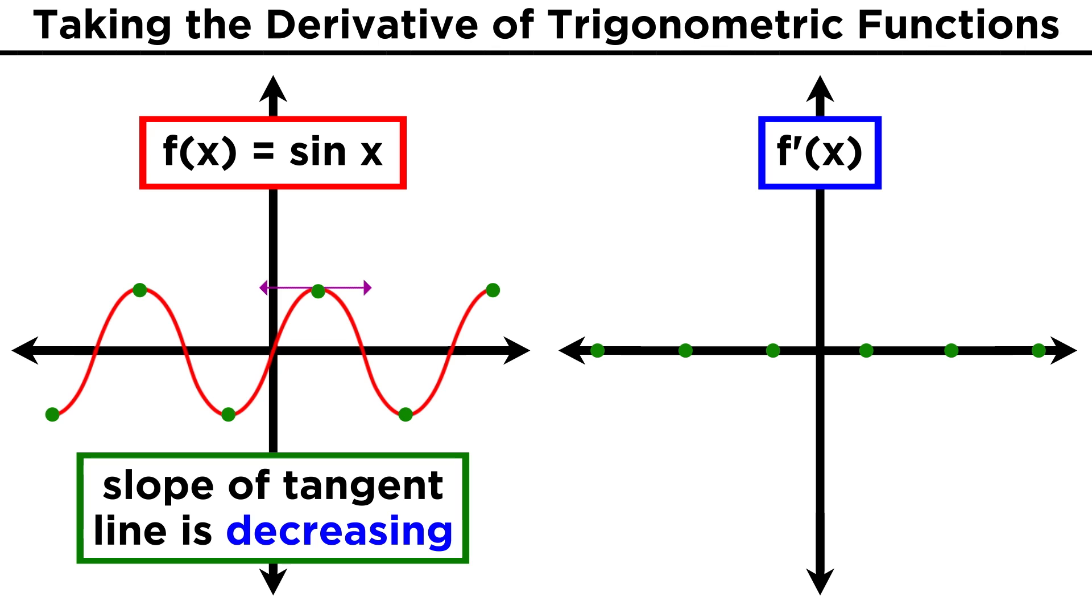Now looking in between, we can see that from this local maximum, the slope of sine x will decrease until it hits negative one, and then will increase until it hits zero again at the next local minimum. So the derivative should look like this for that section.